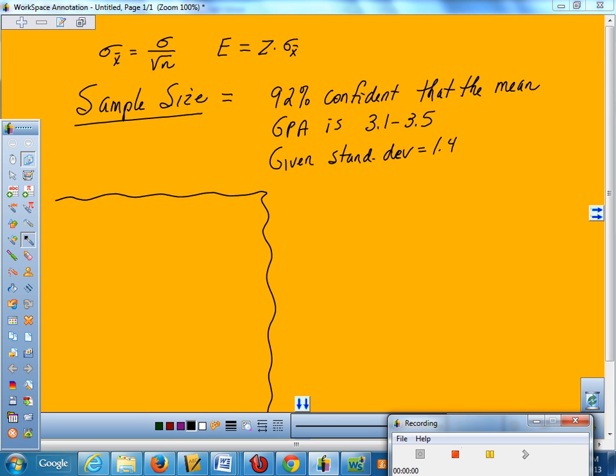I'd like to finish up what we didn't get done last time, which is learning how to appropriately find sample size. If you're actually conducting a study, how do you figure out how big a sample you need to have accurate results? That's also dependent upon how confident you want to be.